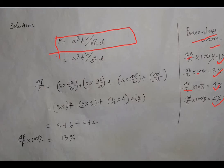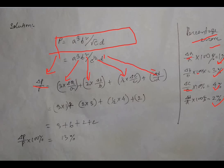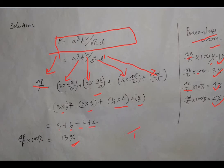The expression for del p by p: the power of a is 3, so 3 comes as coefficient giving 3 times del a by a. The power of b is 2, giving 2 times del b by b. The power of c is half, giving half times del c by c. The power of d is 1, giving 1 times del d by d. Multiplying each by 100 for percentage error: 3 times 1 plus 2 times 3 plus half times 4 plus 1 times 2 equals 3 plus 6 plus 2 plus 2 equals 13%. The total percentage error in p is 13%.